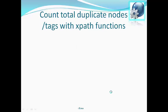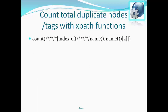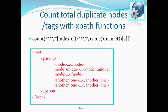Counting total duplicate nodes with XPath functions: in XPath 2.0, it is possible to select with a single XPath expression all the children of a given parent that have at least one other sibling with the same name — that is, how to find duplicate nodes. When this expression is applied on the provided XML document, the answer comes as 2, because 2 nodes are present with duplicates.